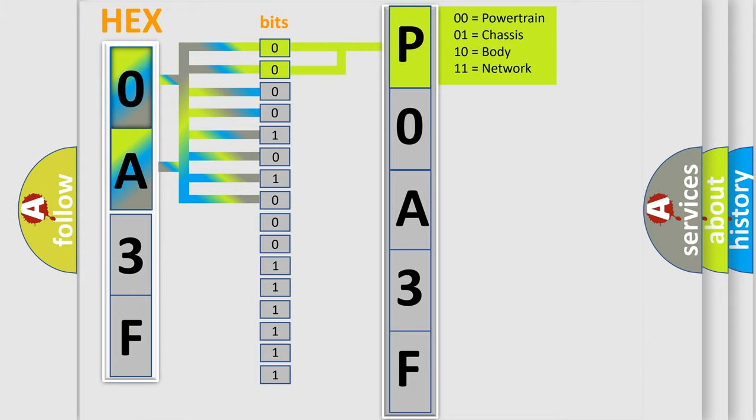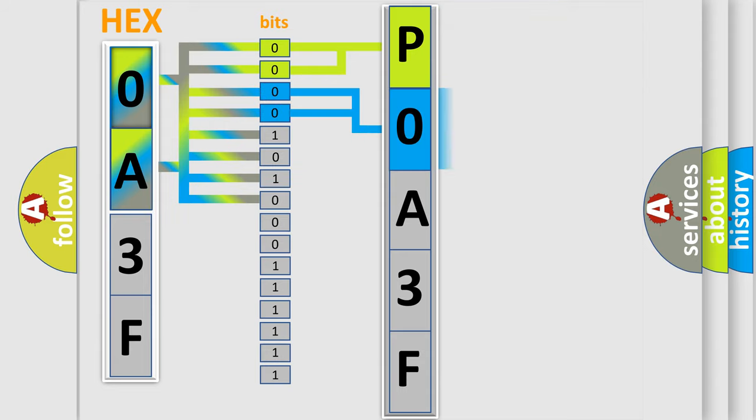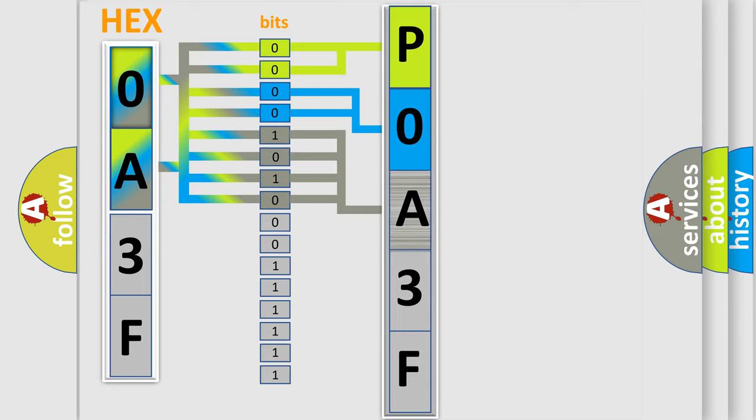By combining the first two bits, the basic character of the error code is expressed. The next two bits again determine the second character. The last bit styles of the first byte define the third character of the code.